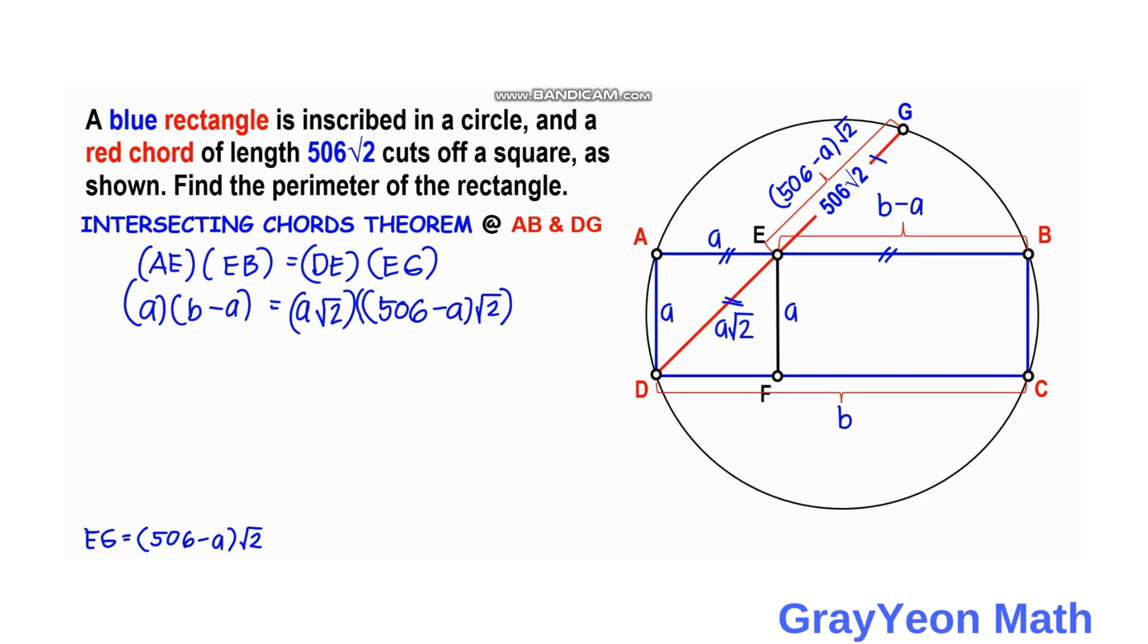Next we can cancel this a because it is common to both sides. So we have b minus a is equal to, we can simply multiply this √2 and √2. So this becomes 2 times (506 minus a). Simplifying the right hand side, this becomes 2 times 506 which is 1012 minus 2 times a, that will be 2a.